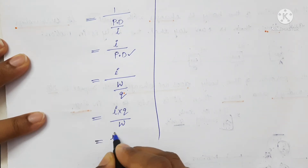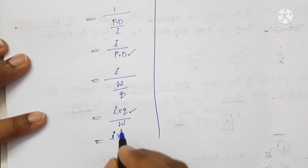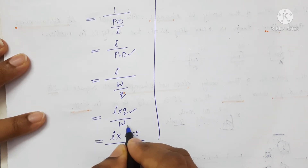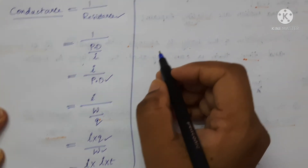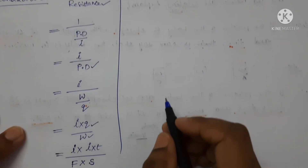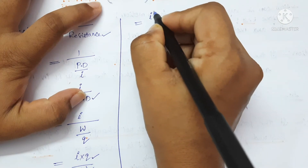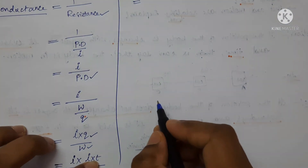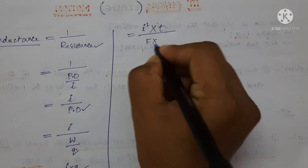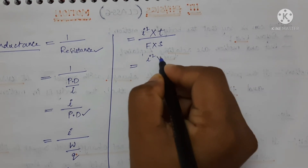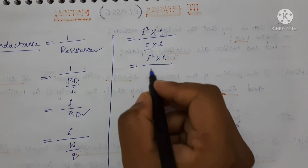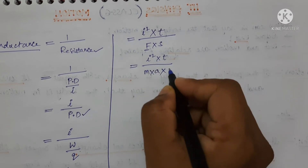Now, I into — write the formula for charge. Charge is equal to current into time. Write the formula for work done. That is, force into displacement, where F is the force and S is the displacement. So we get I square into time upon F into S. Now write the formula for force, which is mass into acceleration. So it becomes I square into T upon mass into acceleration into S, displacement.